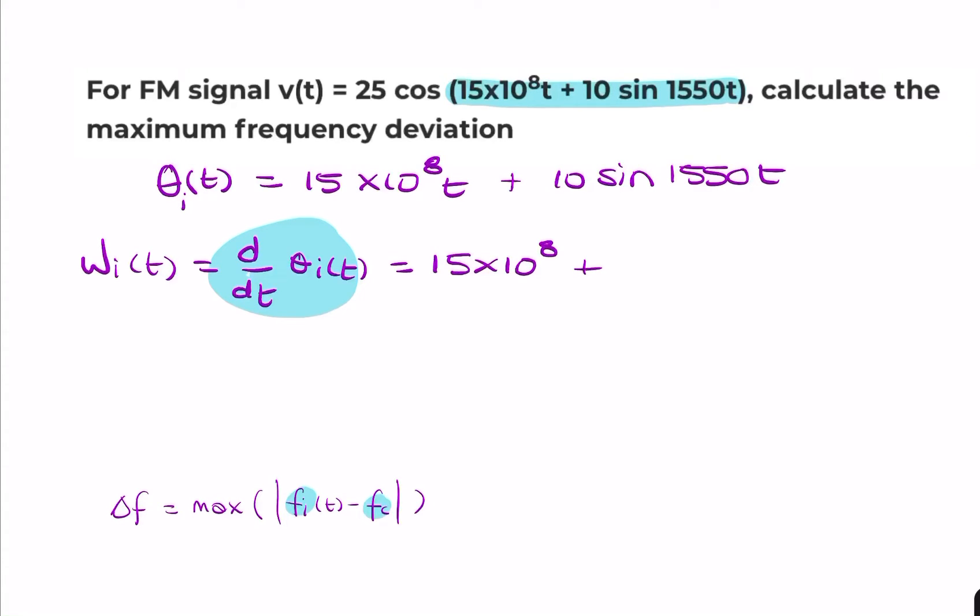And the derivative of a sine is a cosine. But we have to multiply, obviously, by the coefficient. So it's a chain rule, cosine 1550t.